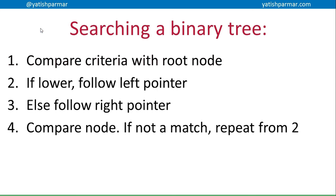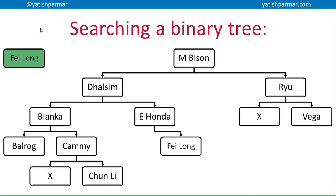Basically, you have a set of rules. You compare your criteria with the root node — if it matches, you're done. If what you're looking for is lower than the root node, you follow the left pointer, else you follow the right pointer. You compare the node you're at, and if it's not a match, you repeat: if it's lower go left, otherwise go right. For example, I'm looking for Fei Long. I compare Fei Long with M. Bison — he is clearly lower, so I follow the left pointer, check Dao Sim. Fei Long is higher than Dao Sim, so I follow the right branch, higher than E Honda, follow the right branch, and I've found Fei Long in my binary tree.